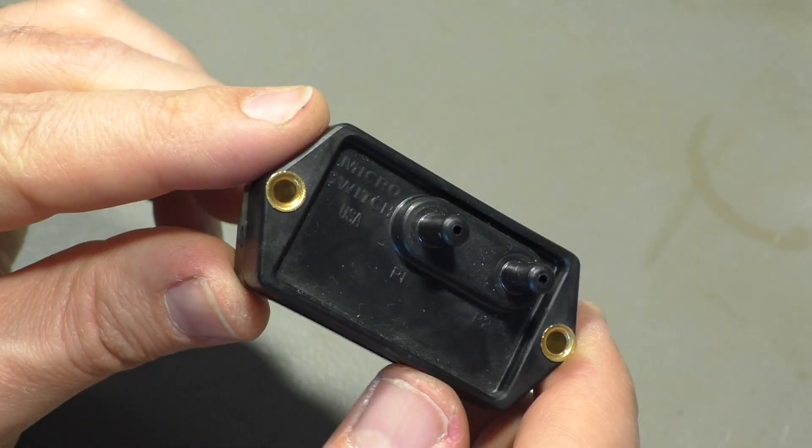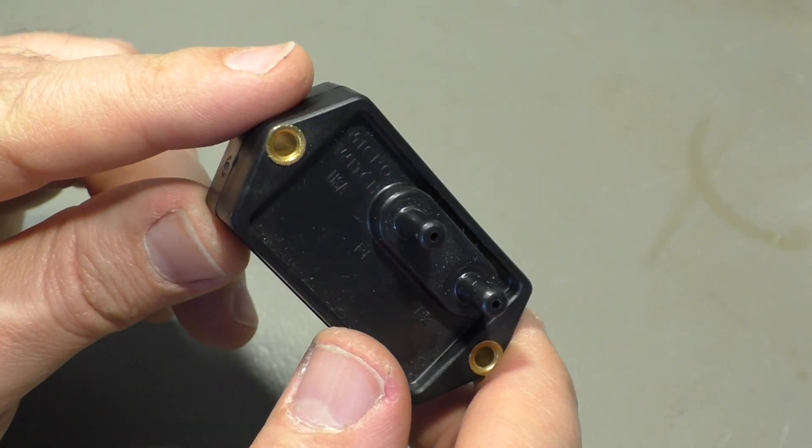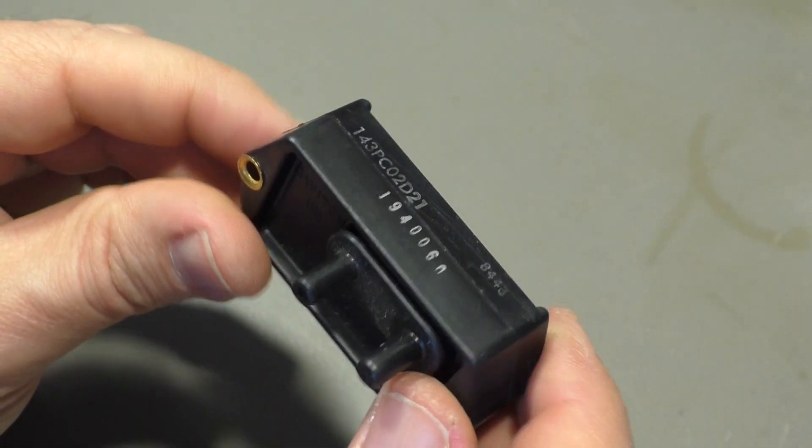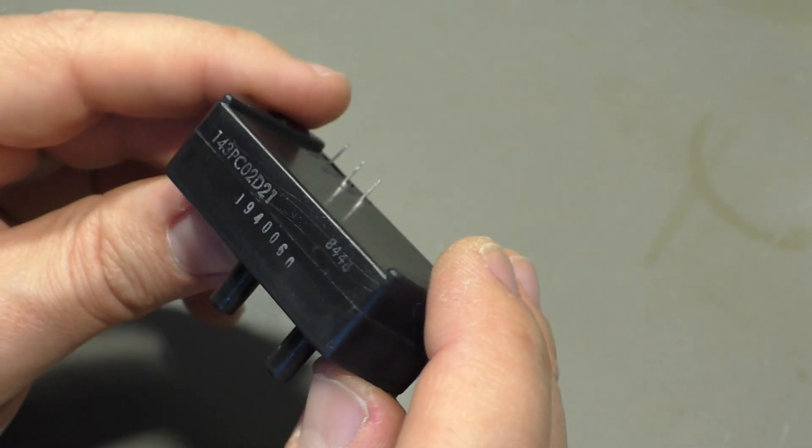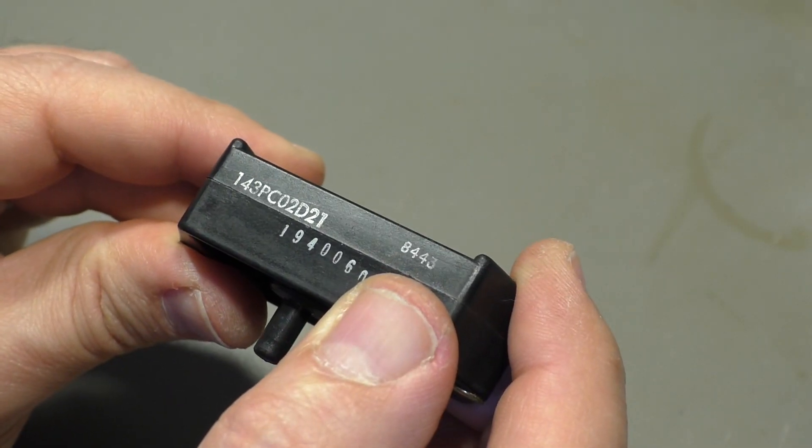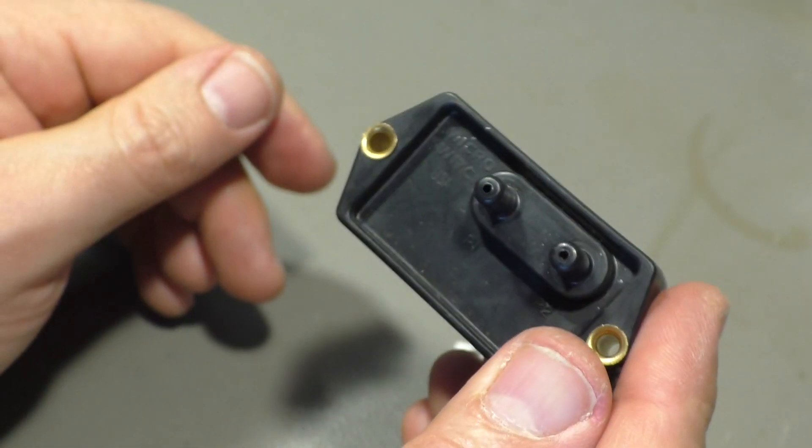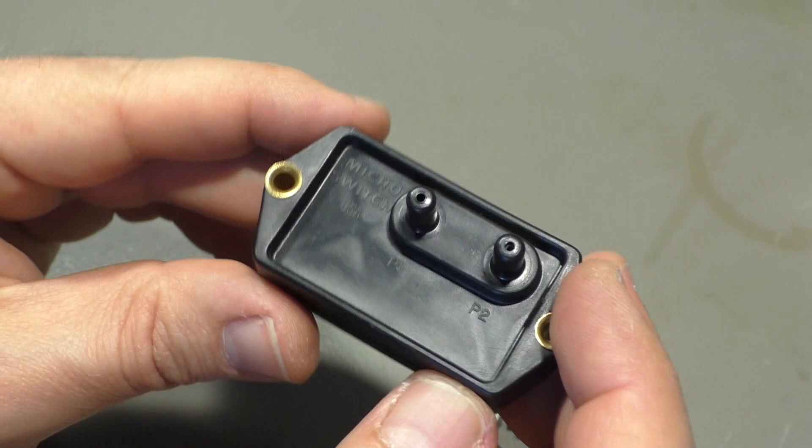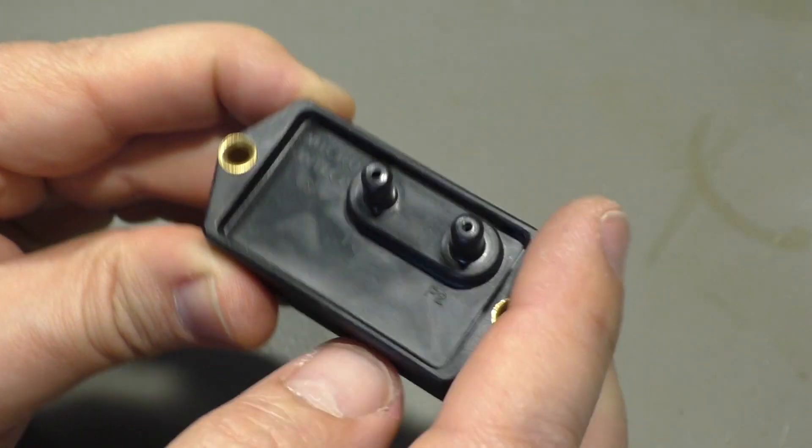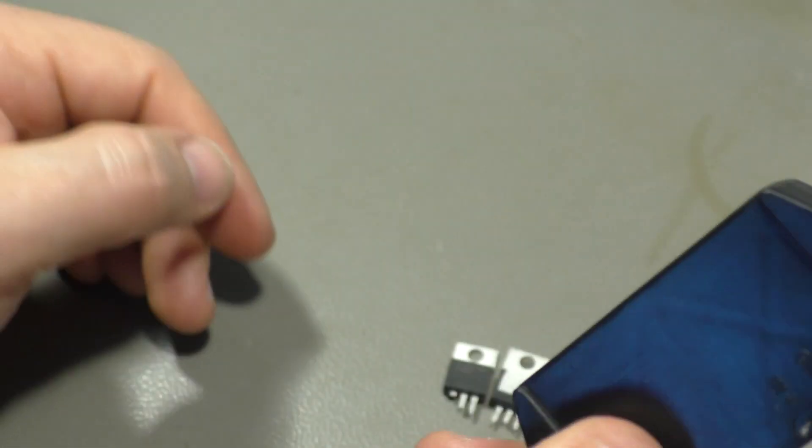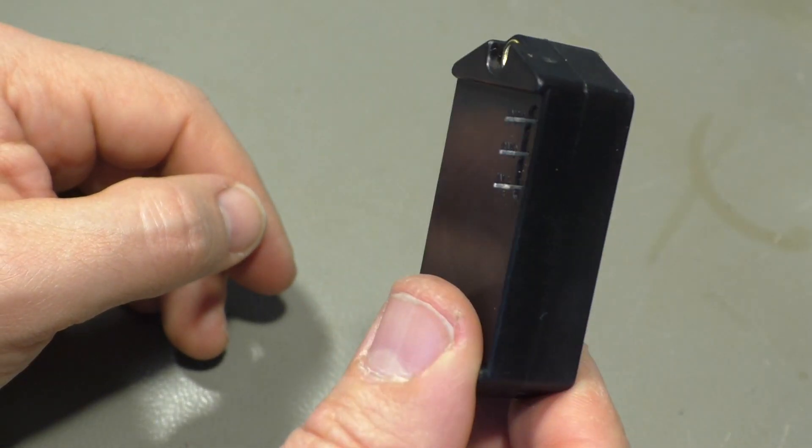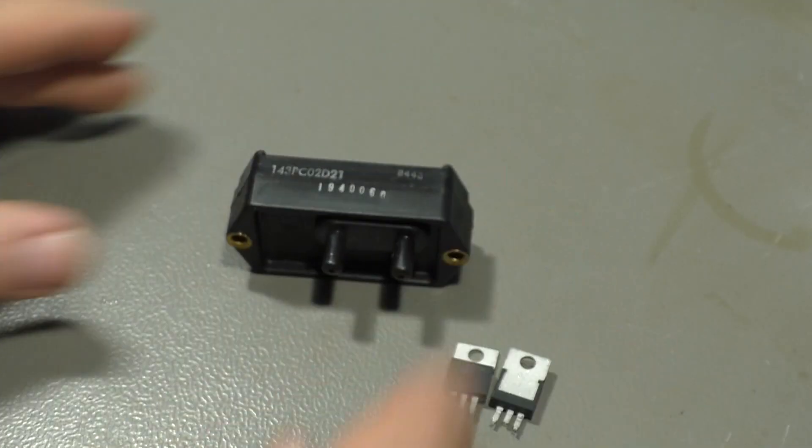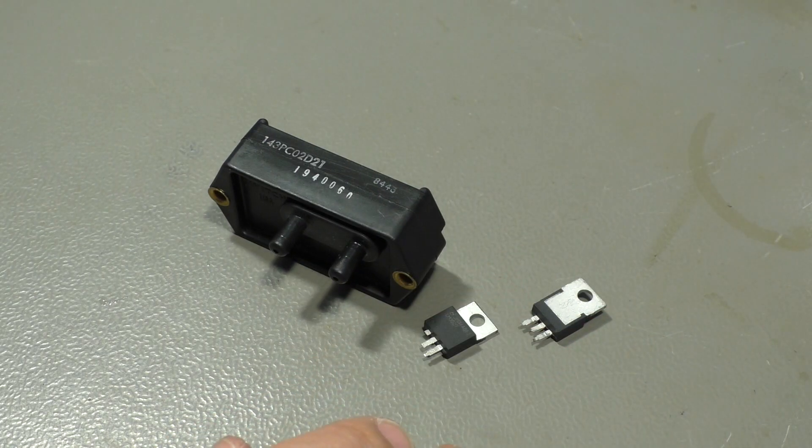It was used to measure the oxygen pressure in a respirator device and this one is rather old. It's from 1984 but you can still buy them. They still look exactly the same. They are no longer from Microswitch, they are from Honeywell and a sensor like that costs $400 right now.